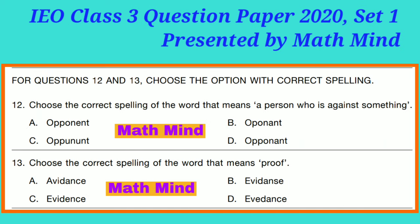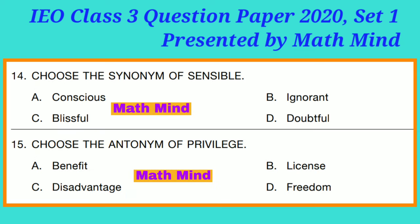For questions 12 and 13, choose the option with correct spelling. Question 12: Choose the correct spelling of the word meaning 'a person who is against something.' Option A is correct: 'Opponent' — O-P-P-O-N-E-N-T. Question 13: Choose the correct spelling of the word meaning 'proof.' Option C is correct: 'Evidence' — E-V-I-D-E-N-C-E. Question 14: Choose the synonym of 'sensible.' Option A is correct: 'Conscious.' Question 15: Choose the antonym of 'privilege.' Option C is correct: 'Disadvantage.'